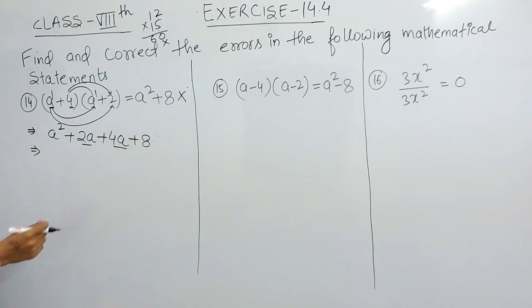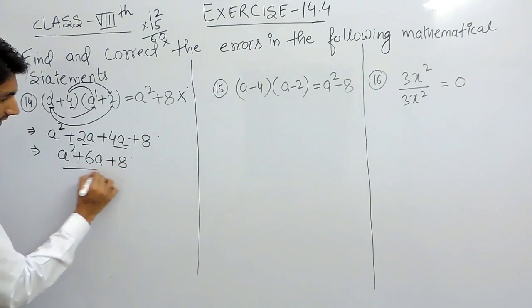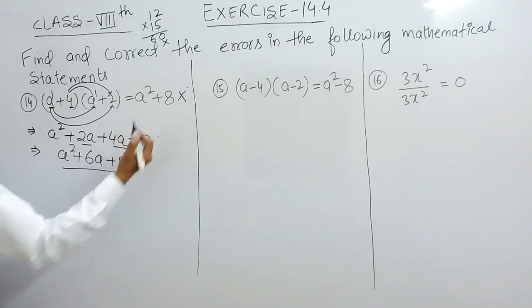This and this are like terms because the variable is same, so these two can be solved. Plus plus is plus. 4 plus 2 is 6a, and the other terms will remain as it is. So this is the correct answer for this expression, not this.